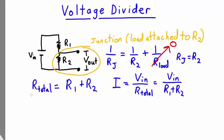Now that we know the current flowing through the circuit, we can find the voltage across R2. The voltage across R2 is going to be equal to the current flowing through it times the resistance of R2, which is equal to R2 times Vin divided by R1 plus R2.